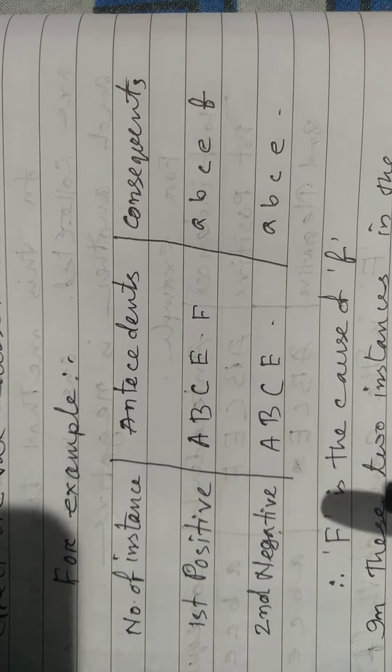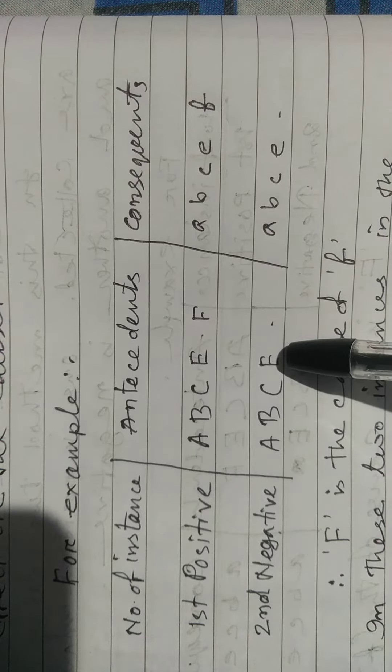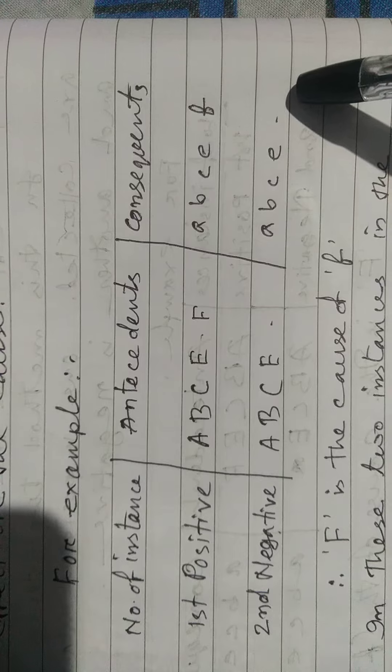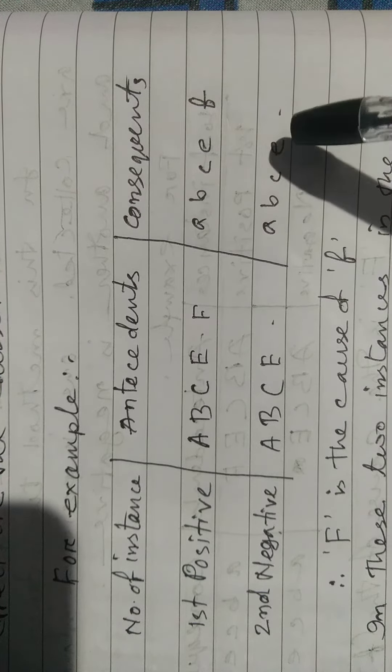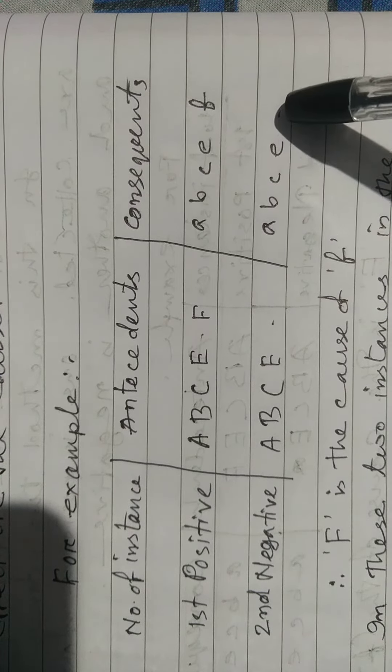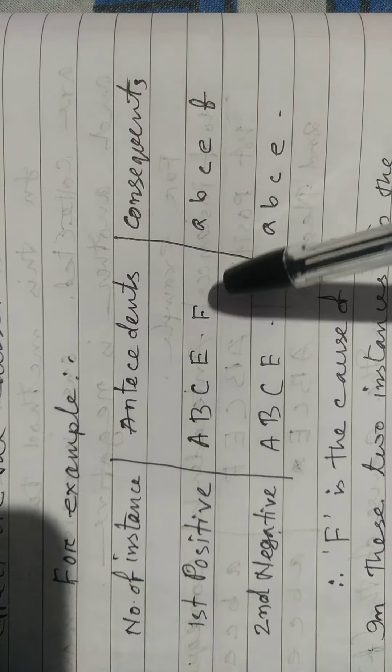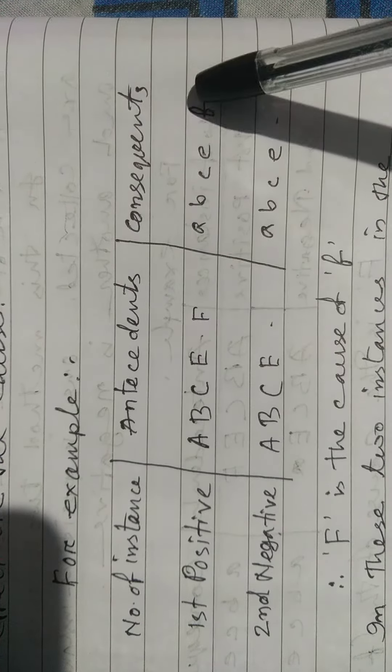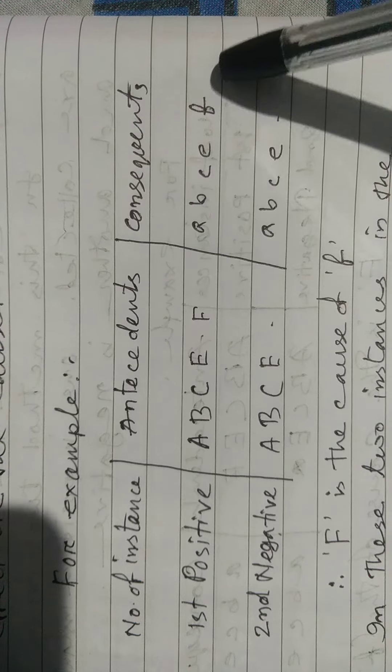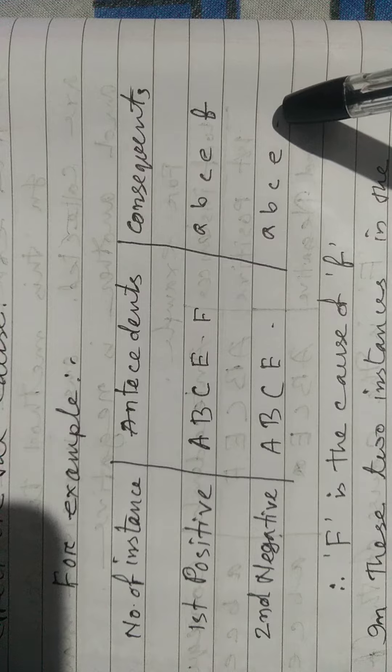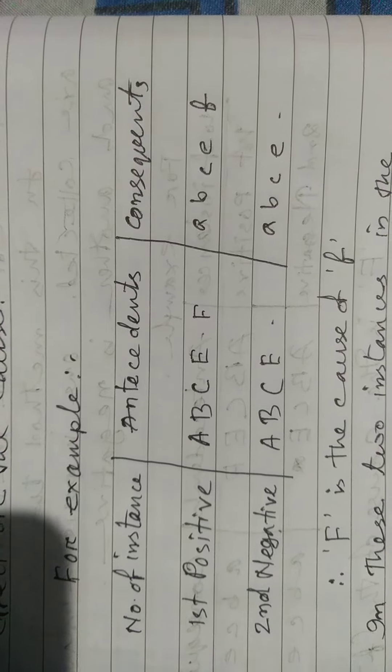In the negative instance, we have capital A B C E where capital F is absent, and therefore lowercase a b c e is present but lowercase f is absent. Where capital F is present, lowercase f is present; where capital F is absent, lowercase f is absent. Therefore, capital F is the cause of lowercase f.